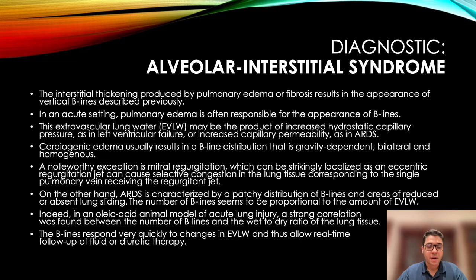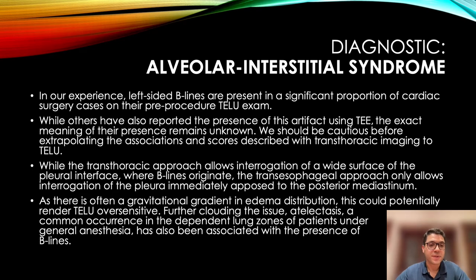On the other hand, ARDS is characterized by a patchy distribution of B-lines in areas of reduced or absent lung sliding. The number of B-lines seems to be proportional to the amount of extravascular lung water. Indeed, in an oleic acid animal model of acute lung injury, a strong correlation was found between the number of B-lines and the wet-to-dry ratio of the lung tissue. B-lines respond very quickly to changes in extravascular lung water and thus allow real-time follow-up of the effect of diuretic therapy.